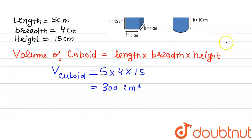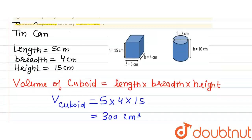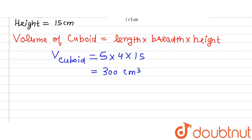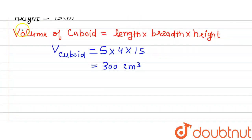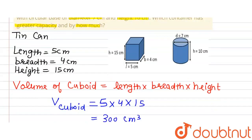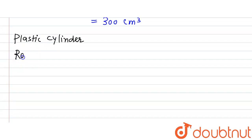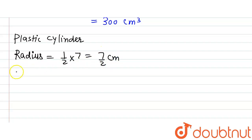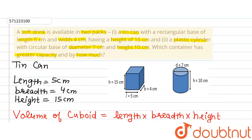Now we will proceed and find out the volume of the plastic cylinder. For the plastic cylinder, the diameter is given as 7cm, so the radius will be half of diameter, that is 7/2 cm. The height of the plastic cylinder is 10cm.